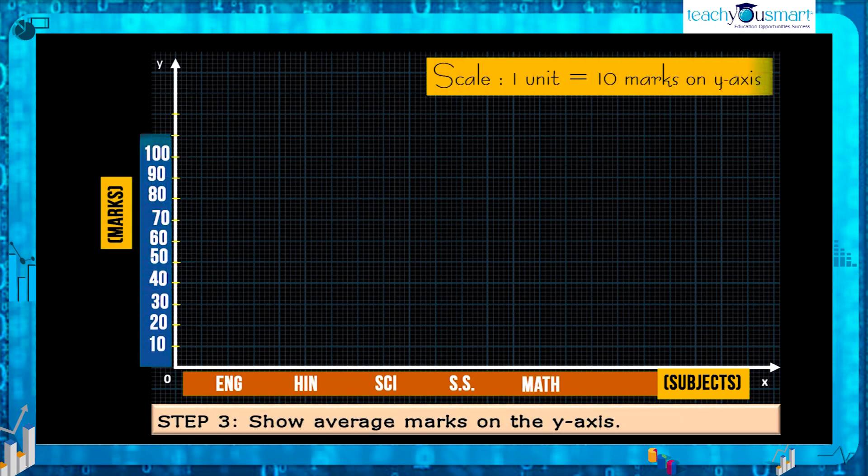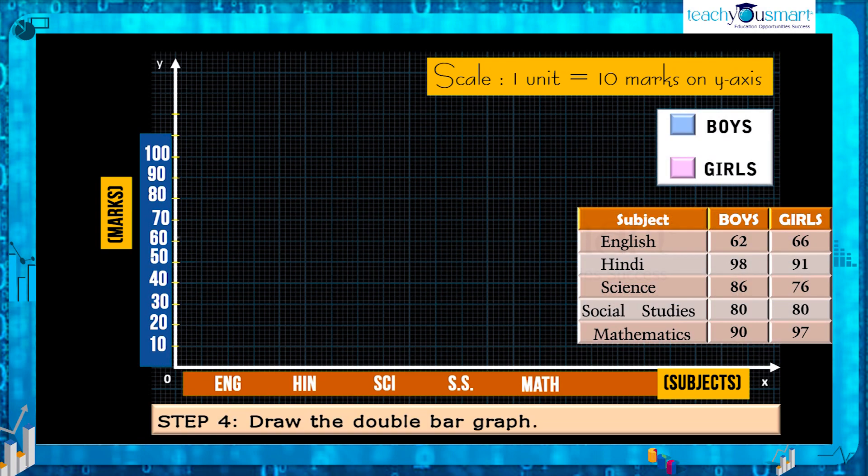Then show the average mark on the y-axis. For that choose a convenient scale to represent numerical data correctly. Here we can take the scale as one unit equals 10 marks.